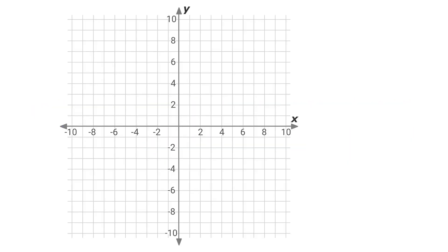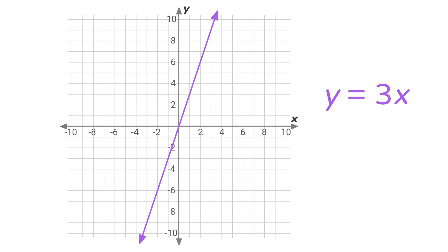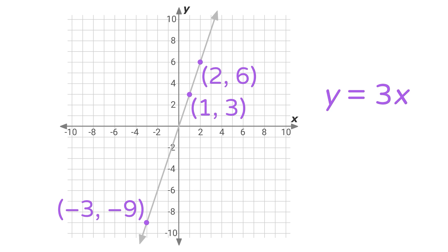First, let's graph a line. This line is the graph of the equation y equals 3x. Note also that every point on the line is a solution to y equals 3x. The point (1, 3), the point (2, 6), the point (-3, -9) — they are all on the line and they are all solutions to the equation of the line.